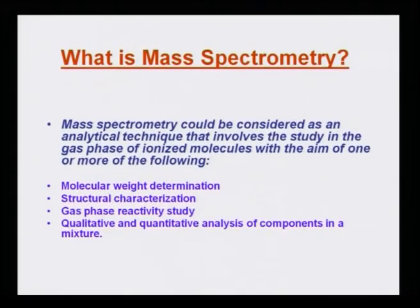Mass spectrometry is an analytical technique that involves the study in the gas phase of ionized molecules, with the aim of one or more of the following: molecular weight determination, structural characterization, gas phase reactivity study, and qualitative and quantitative analysis of components in a mixture. These are the four major things that mass spectrometry can yield.